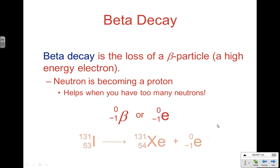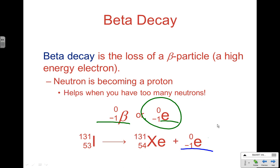Beta decay is the loss of a high-speed, high-energy electron. A beta particle is shown by the symbol 0 over negative 1 e. What's really happening inside the nucleus is a neutron is being converted to a proton — that's why it helps solve the problem of too many neutrons, bringing our ratio back into the belt of stability. We eject a high-speed electron from the nucleus. For example, 131 plus 0 equals 131 for mass numbers, and 54 plus negative 1 equals 53 for atomic numbers. A negative 1 in that position means we're talking about the electron.